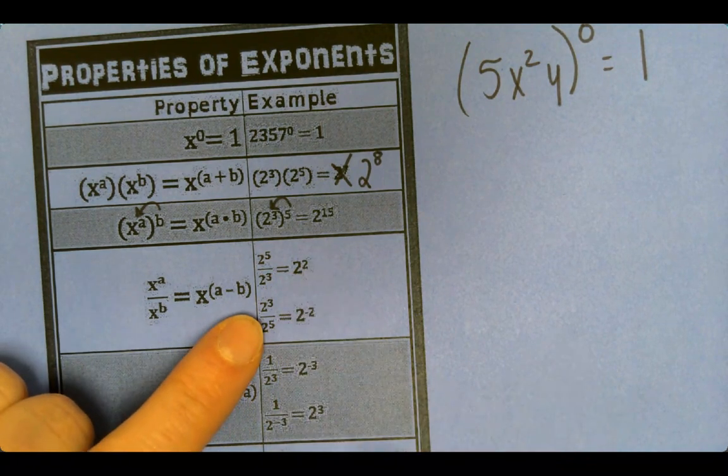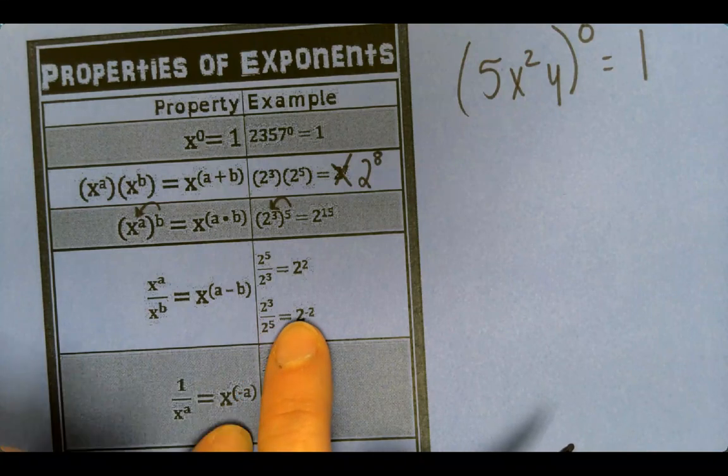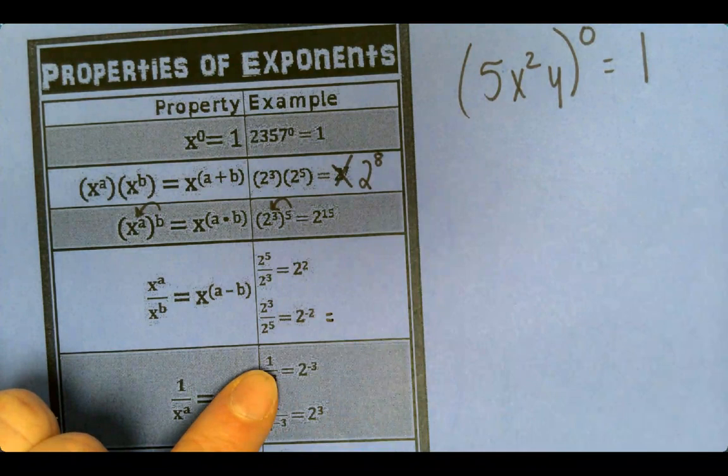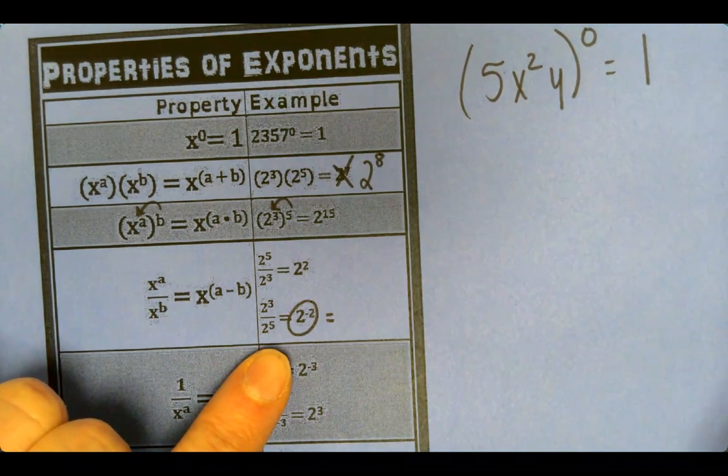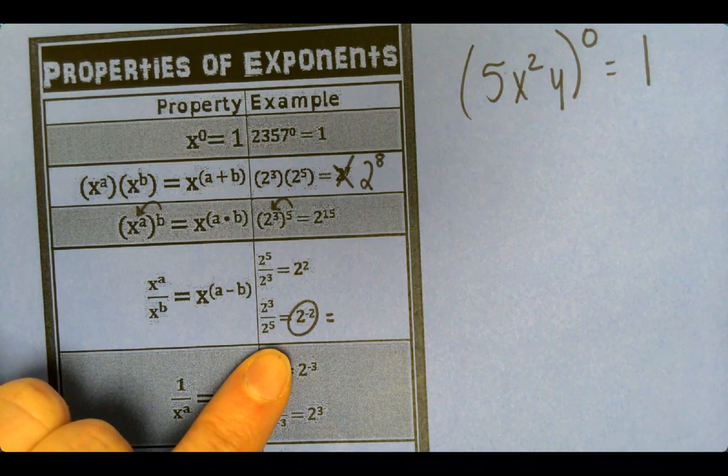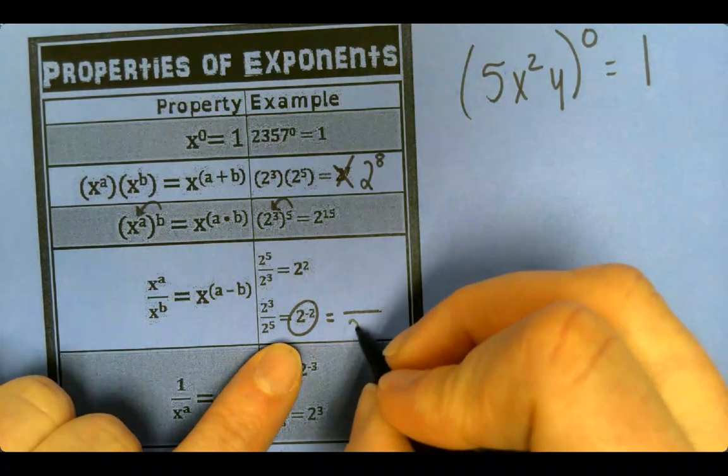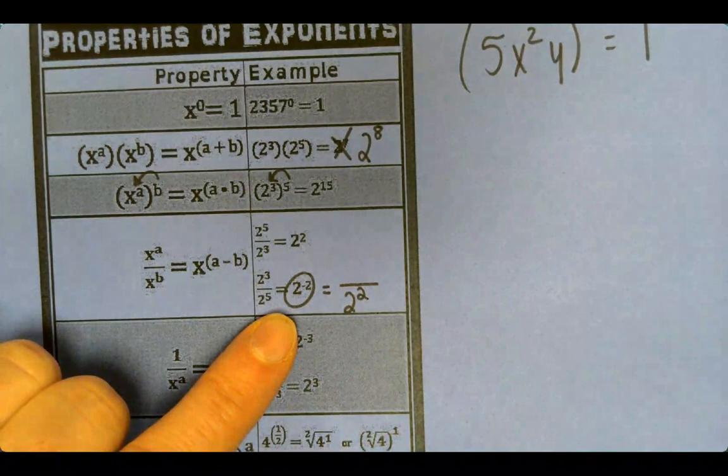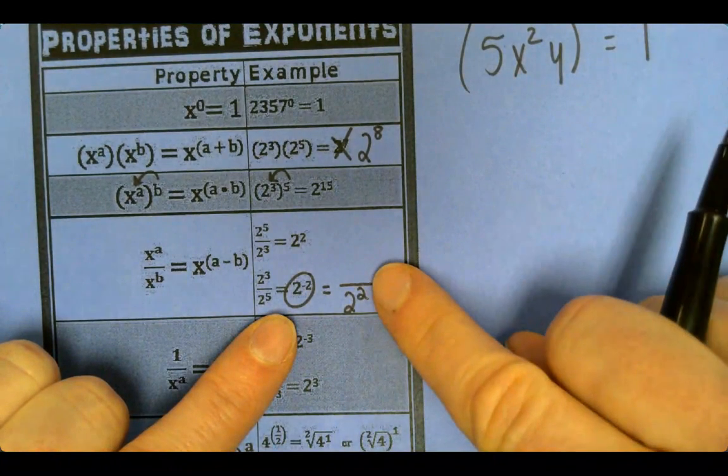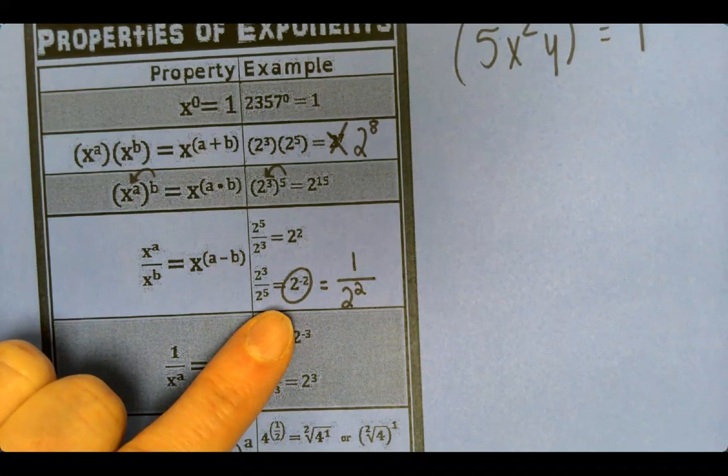So if these are flipped around, it would be 3 minus 5, which is a negative 2. You can't leave your answer as a negative power. So I'm going to circle that whole term. And this is on the top because it's just a whole number. A whole number is over 1. We're going to rewrite it on the bottom. That's 2 squared. But if nothing's there, it's an understood 1. So I put that 1 on top. So it's actually 1 over 2 squared.